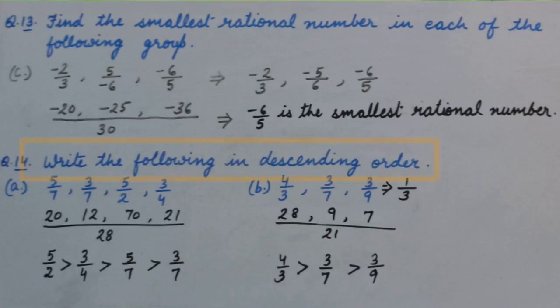Question number 14. Write the following in descending order. Part A: 5 upon 7, 3 upon 7, 5 upon 2, and 3 upon 4. Because all the denominators are positive, we will take out the LCM, that is 28.